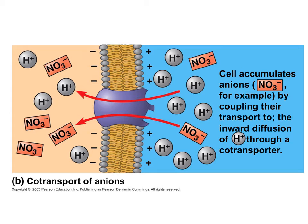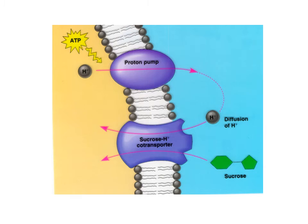The picture on the screen shows an example of a cotransporter — not one found in the proximal convoluted tubule, but it shows how they work. They are transport proteins found in the membrane of cells, and they transport two molecules at the same time from one side of the membrane to the other. For example, one cotransporter allows hydrogen ions and sucrose to pass through at the same time, and it won't allow one to go across the membrane without the other.